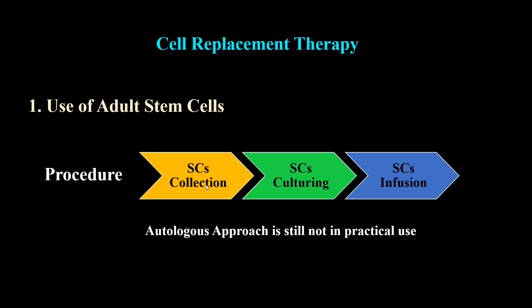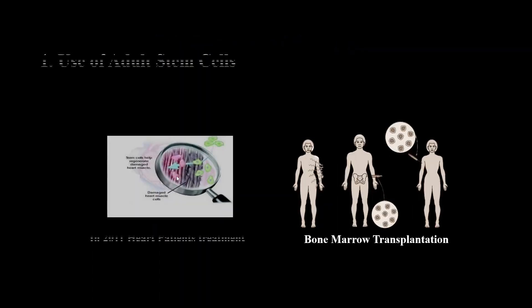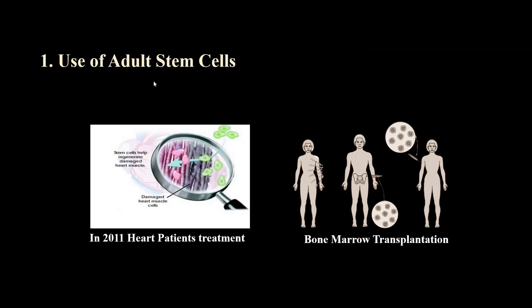If the stem cells are primarily obtained from the patient, this is called an autologous treatment approach, and in this approach the chance of immune rejection is very low. For the first time, adult stem cells were used in 2011. A team of scientists obtained stem cells from the hearts of patients during heart surgeries, cultured them, and then infused them back. Surprisingly, about 50% of the damaged heart muscles were replaced by healthy muscle tissue in all those patients.